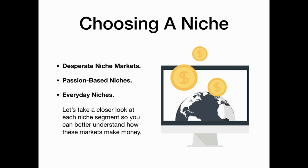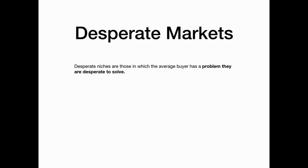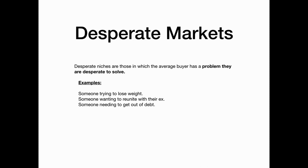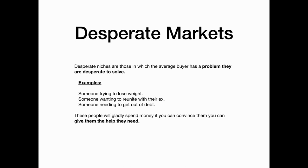Choosing a profitable niche: there are three niche market segments — desperate niche markets, passion-based niches, and everyday markets. Desperate markets are niches that involve average buyers who have a problem they are desperate to solve. Examples would be someone trying to lose weight, get back with their ex, or get out of debt. These people would gladly spend money if you can convince them you can help solve their problem. In desperate markets, you are a problem solver.